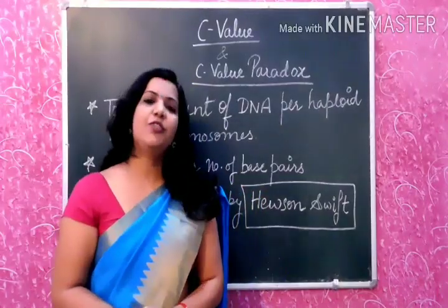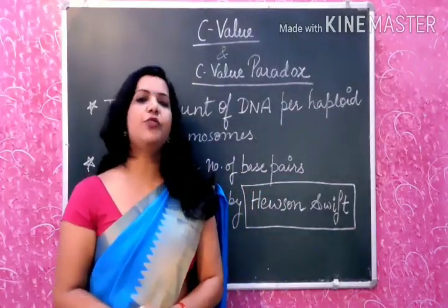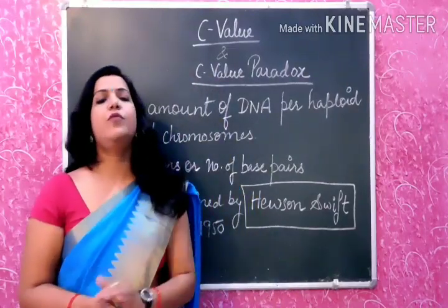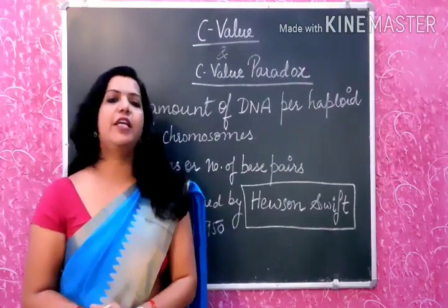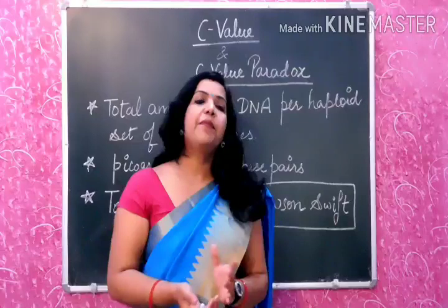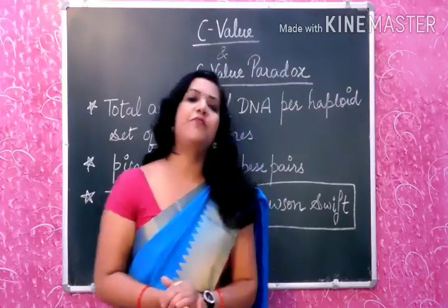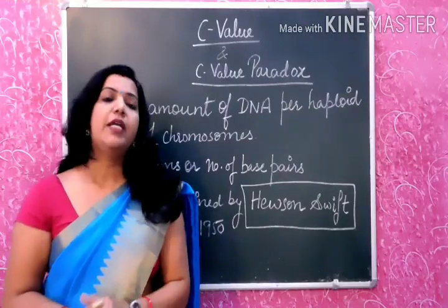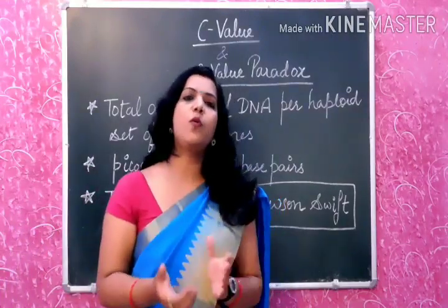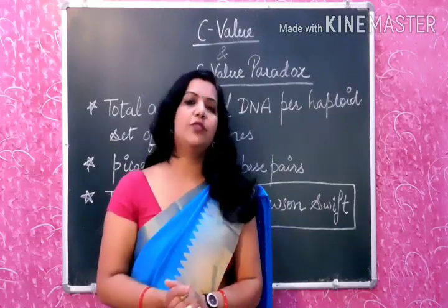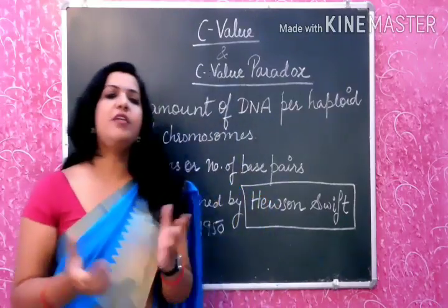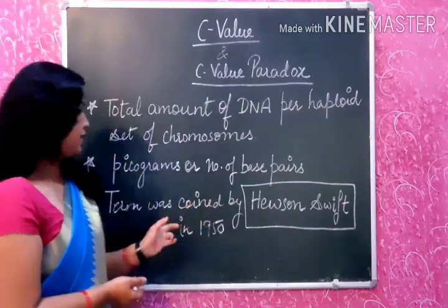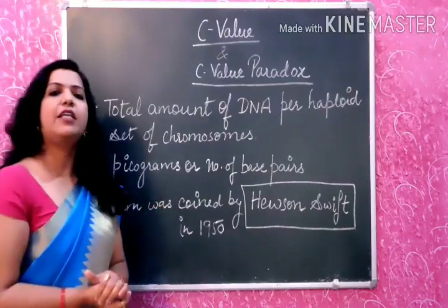Welcome to all my viewers. Today I am back with a new topic: C-value and C-value paradox. C-value is the total amount of DNA, measured either in picograms or number of base pairs per haploid set of chromosomes. In 1 haploid set of chromosomes, the total amount of DNA present — that value is called C-value. This term was proposed by Hewson Swift in 1950.